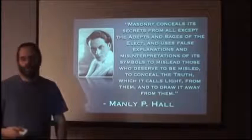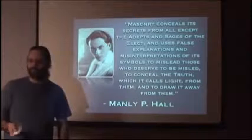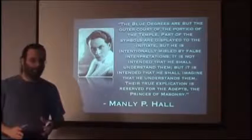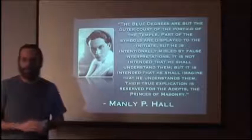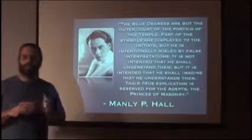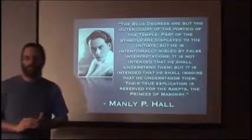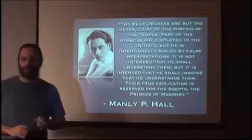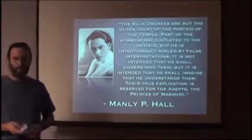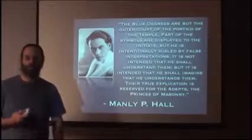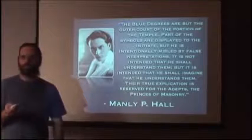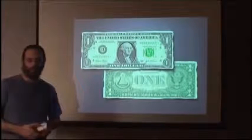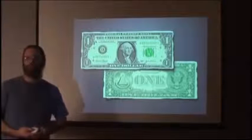Manly P. Hall also said that the blue degrees are but the outer court or portico of the temple — hence the term 'porch masons.' Part of the symbols are displayed to the initiate, but he is intentionally misled by false interpretations. It is not intended that he shall understand them, but that he shall imagine that he understands them. Their true explication is reserved for the adepts, the princes of Masonry. One of the highest-level Freemasons in Masonic tradition is telling you openly what the Blue Lodge degrees are for. And of course the Fraternal Order of Police operates at Blue Lodge degrees of Masonry.